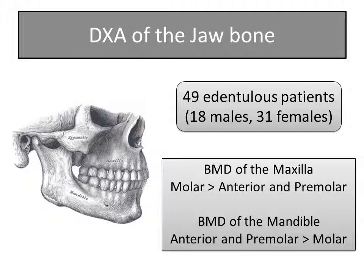What happens in the jawbone when people lose their teeth? A study using DXA for maxillary and mandibular bone in 49 edentulous patients found that bone mineral density of the maxilla was greater in the molar region compared to the anterior and premolar region. However, in the mandible it was the opposite — the anterior and premolar region had higher bone mineral density compared to the molar region.